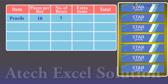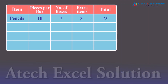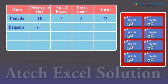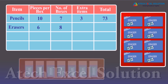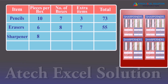Consider each box of pencils has 10 pencils and the stationary man has seven such boxes, giving a total of 70 pencils. He also has three extra pencils, making a total of 73 pencils. Similarly, he has eight boxes of erasers, each containing six pieces, and seven extra erasers, giving a total of 55 erasers.